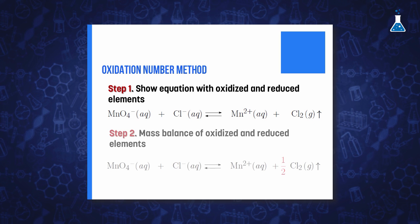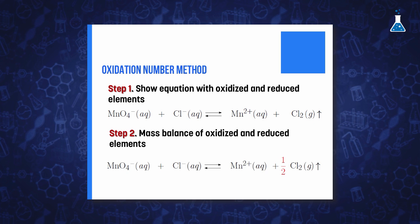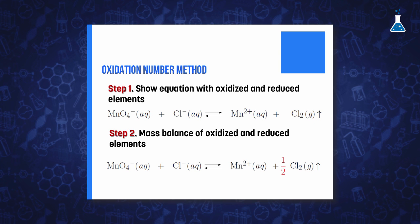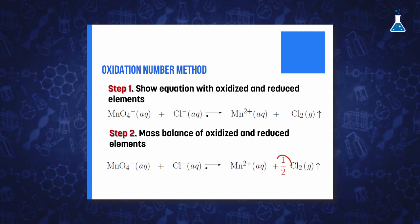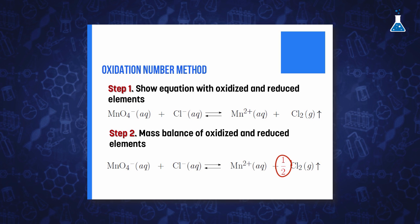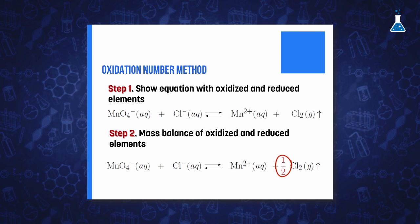Then, we show a first equation where only the elements oxidized and reduced are balanced. In this case, we simply need to add a half in front of the chlorine in the product side of the equation.